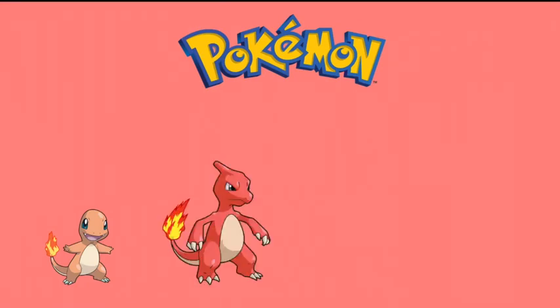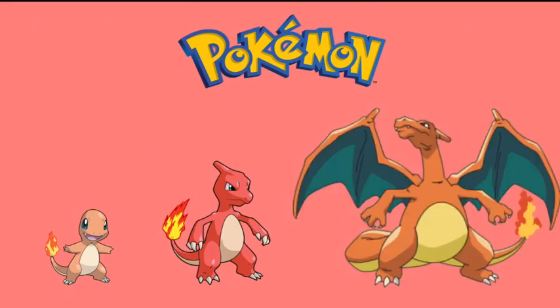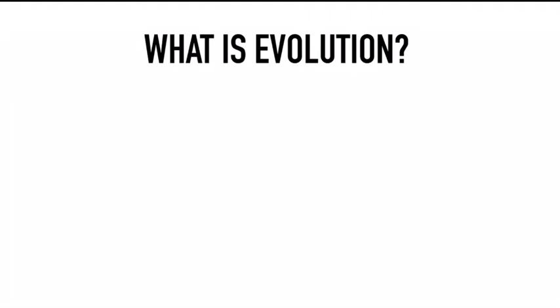In the show, as Charmander got older, instead of becoming bigger in size, it changed or transformed into another Pokémon, and this process was called evolution. Once Charmander became older it became a new Pokémon known as Charmeleon. Similarly, when Charmeleon got older it evolved into another Pokémon known as Charizard. This was the first time I learned about evolution.